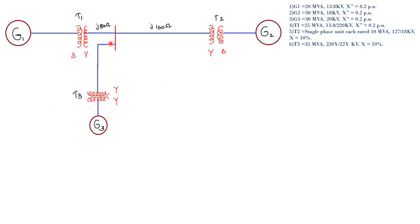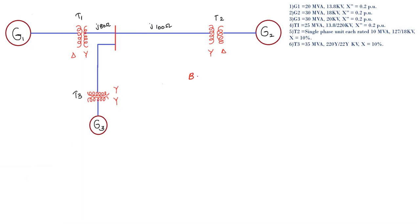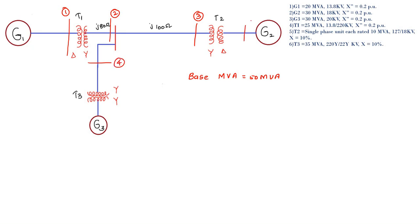See, this is the power system network given. The base MVA is 50 MVA. Base MVA is common for all the components connected in the power system. We draw sections in order to find out the base KV in each section. The sections are: section 1, section 2, section 3, section 4, section 5, and section 6. Total sections equal to 6.